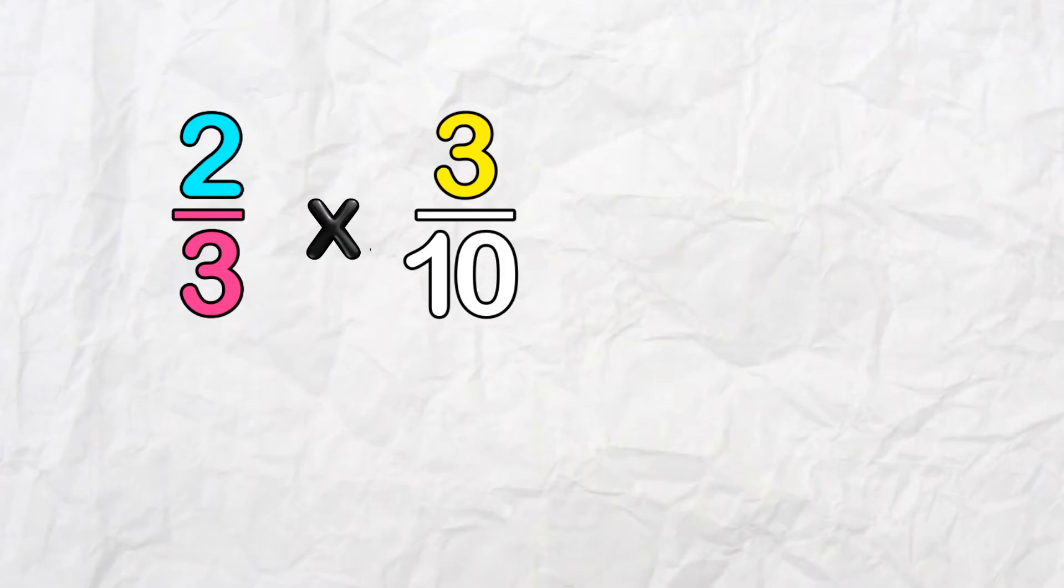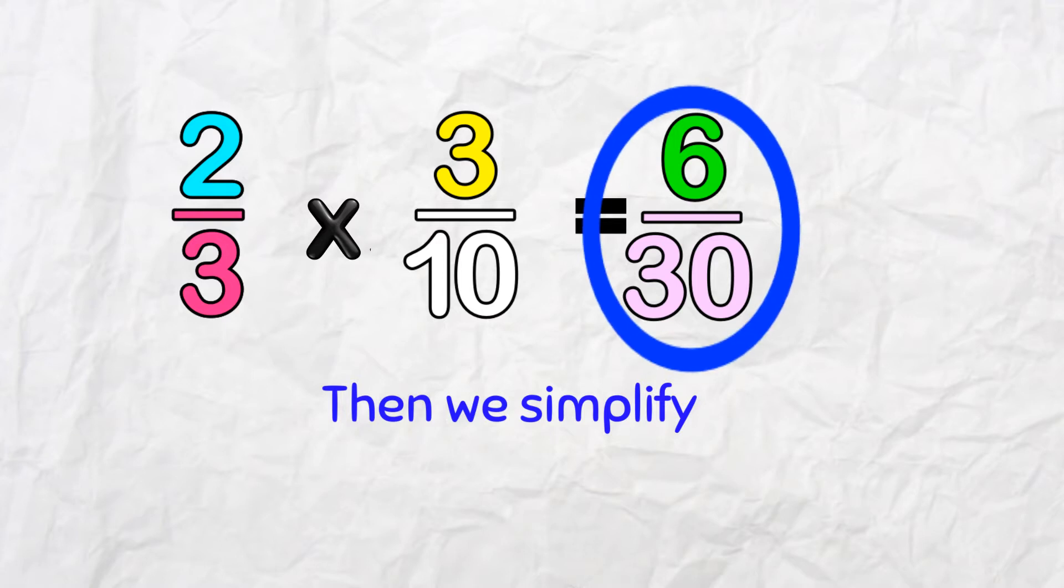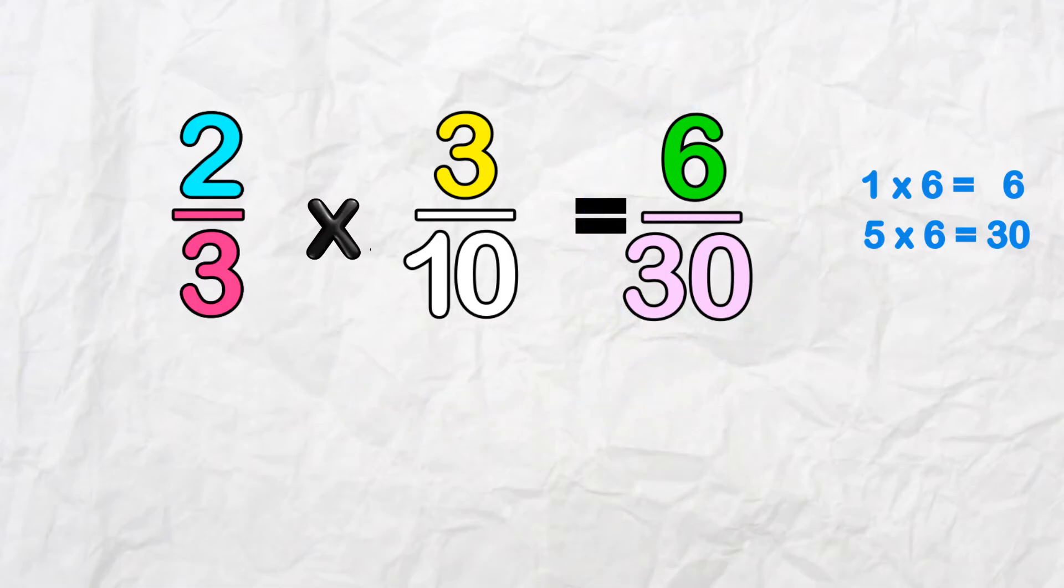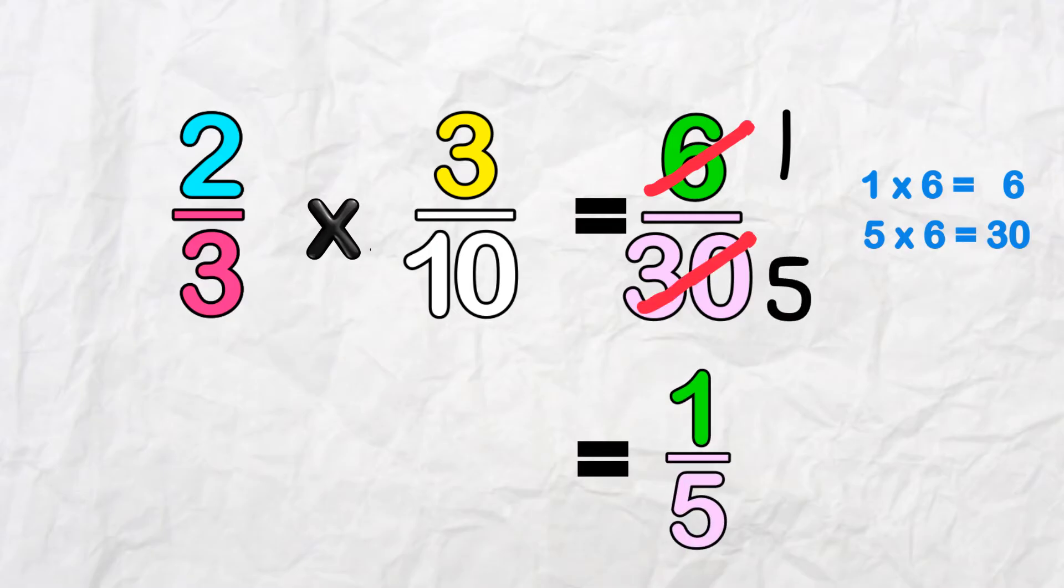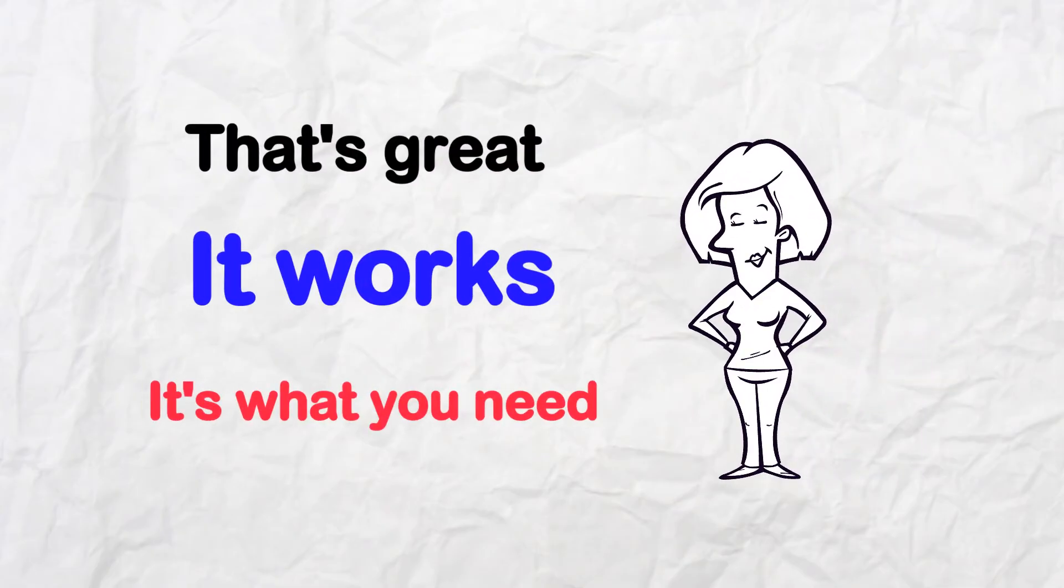Up to now, we've said Top times Top over Bottom times Bottom, and then we simplify. Our numerator and denominator here are both in the 6 times table, so we can divide by 6. And that gives us 1 over 5. When we can't reduce any more, like here, we're done! That's great! It works! It's what you need!